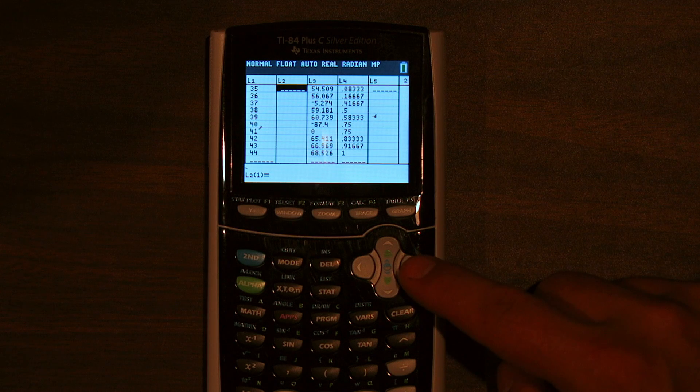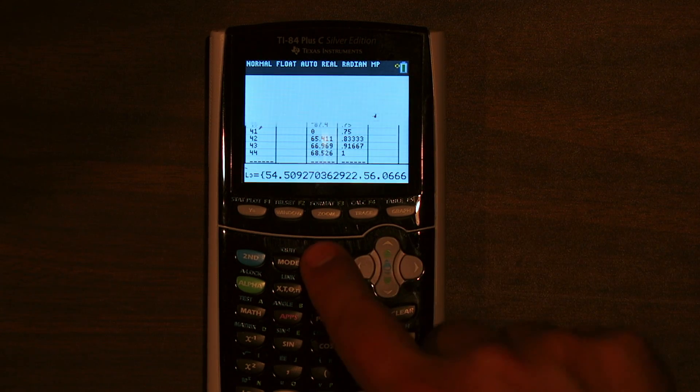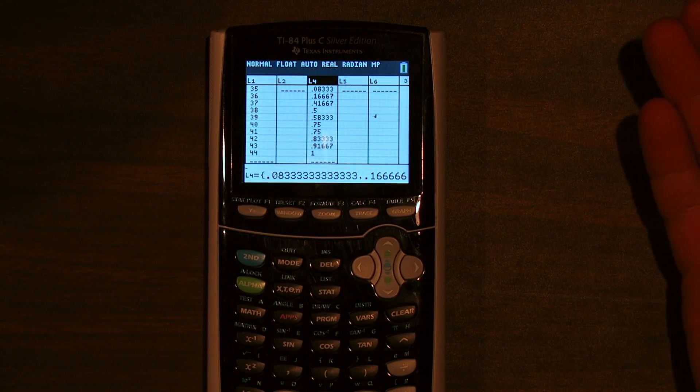However, if I go to list 3 and I press the delete button, it deletes list 3, it's gone.